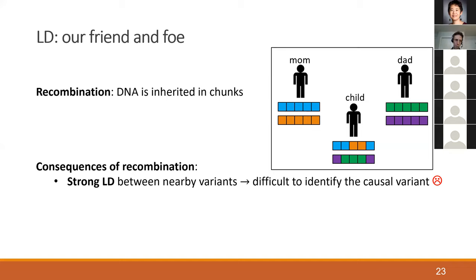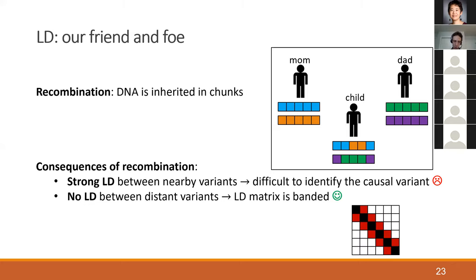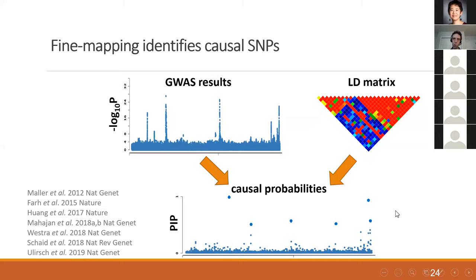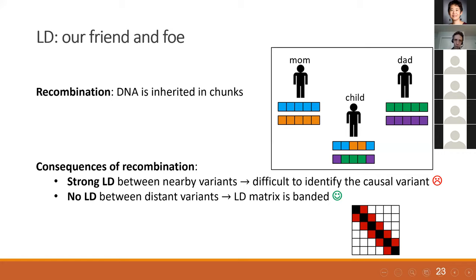The bad news is that we often have very strong LD between nearby variants, making it very difficult to identify the causal variant — if two variables are highly correlated, you can't tell which one is causal. The good news is that we have essentially no LD between distant variants, because recombination diverges quickly. The LD matrix is banded, with zeros far from the diagonal. This means that to identify a causal SNP in a specific region, we only need to look at that region.